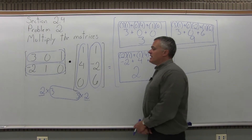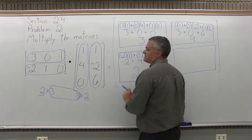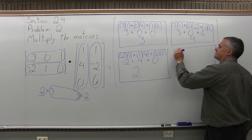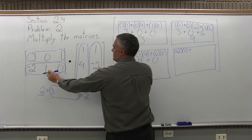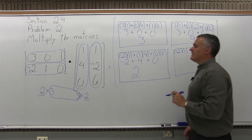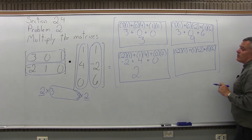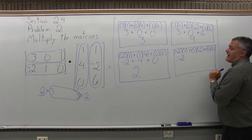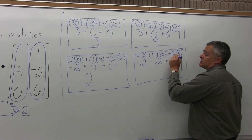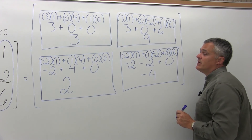There's one last box to fill in. I'm going to multiply the bottom row of the first matrix, negative 2, 1, 0, times the second column of the second matrix, 1, negative 2, 6. First times first is negative 2 times positive 1, plus middle times middle is 1 times negative 2, plus last times last is 0 times 6. Working that out: negative 2 times positive 1 is negative 2, 1 times negative 2 is minus 2, and 0 times 6 is 0. Adding negative 2 minus 2 plus 0, you get a result of negative 4.